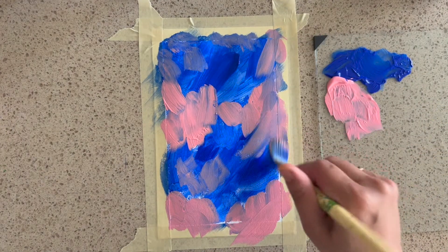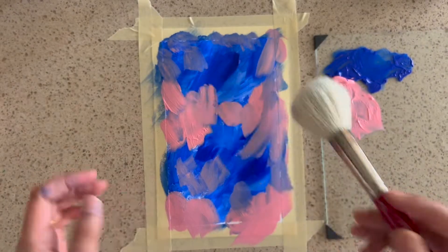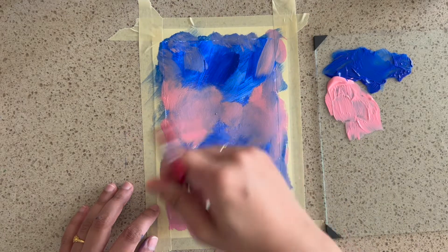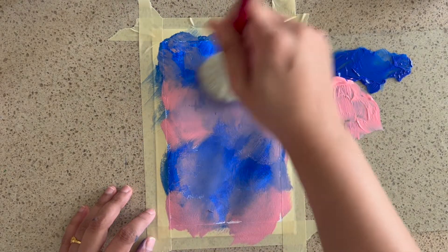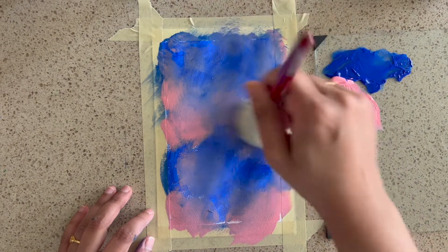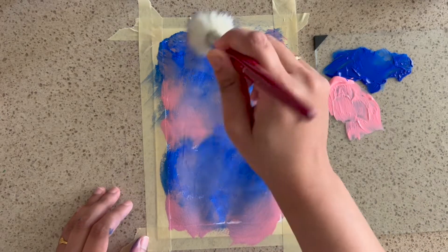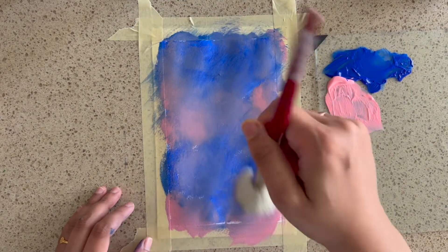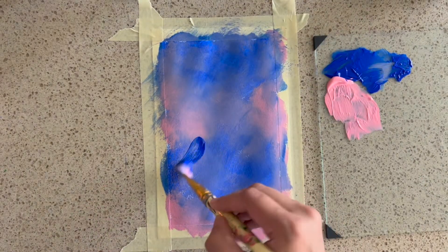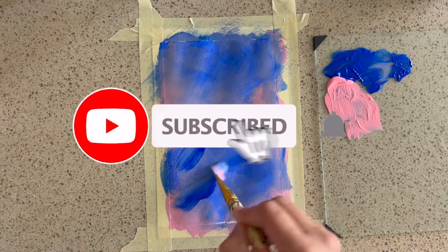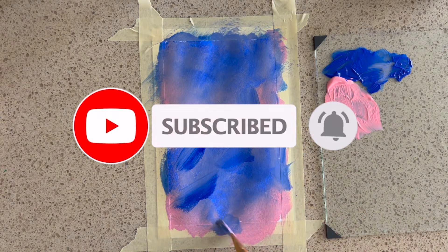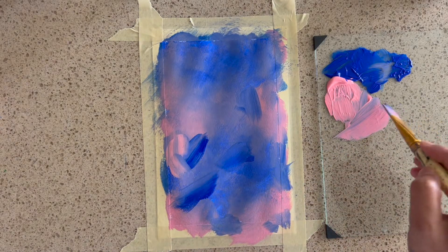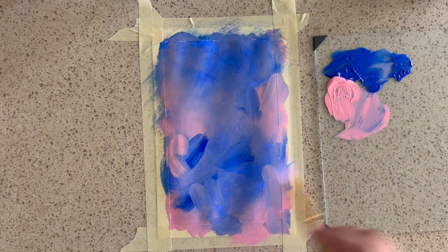After I am done with both the colors, I am using a mop brush over here and I am slightly touching the surface. It is very important that both the colors should be little wet. I am just slightly moving it on the surface that will mix both the colors and give that soft effect. You can repeat the process till you get the desired background.